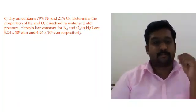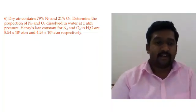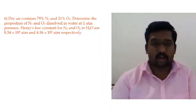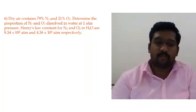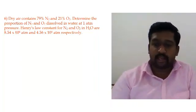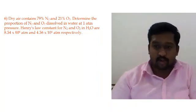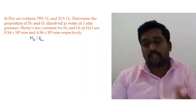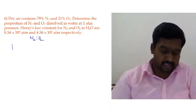Problem 6: Dry air contains 79% N₂ and 21% O₂. Determine the proportion of N₂ and O₂ dissolved in water at 1 atmospheric pressure. The Henry's law constants for N₂ and O₂ in water are given in atmosphere units, so no unit conversion is needed. We need to find the ratio of N₂ and O₂ dissolved in water.